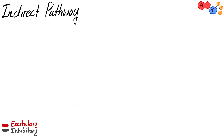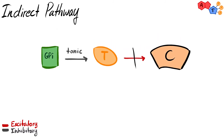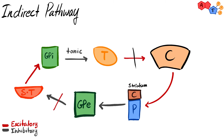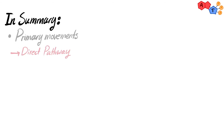The indirect pathway is activated to prevent unwanted movements. Signals from the cerebral cortex activate the striatum, which inhibits globus pallidus externa. Globus pallidus externa, when active, inhibits the subthalamic nucleus - so by inhibiting GPe, we leave the subthalamic nucleus active. The subthalamic nucleus then activates globus pallidus interna, which inhibits the thalamus, so no movement occurs.